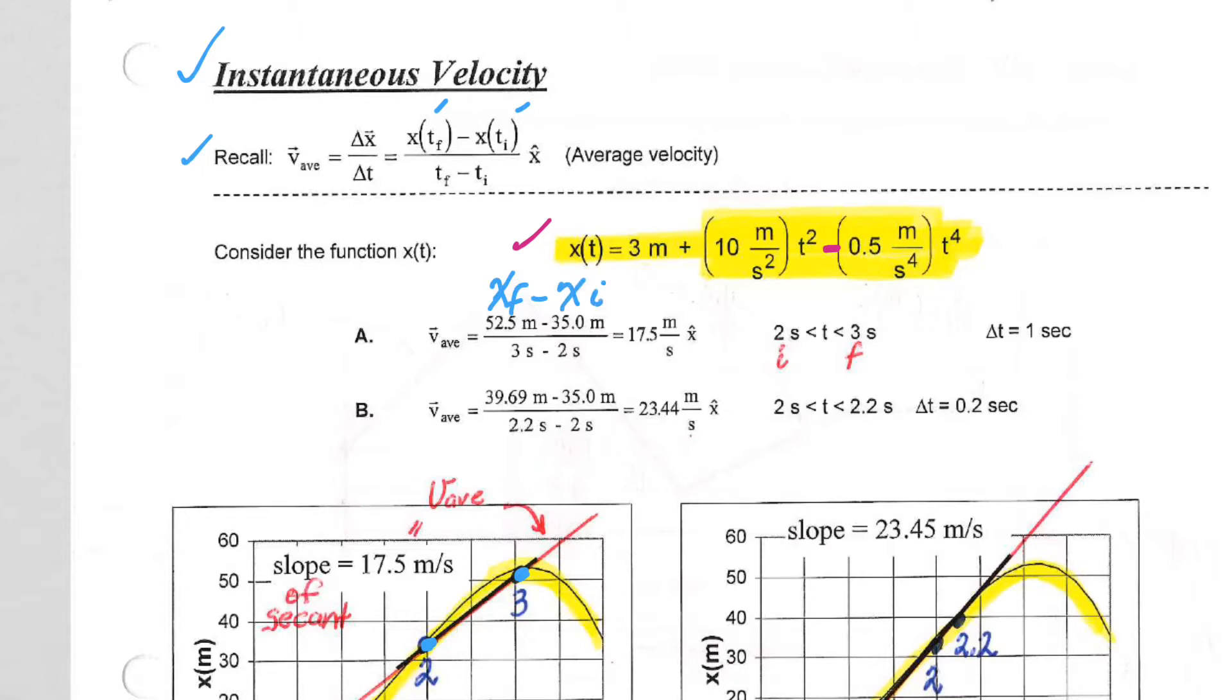I plugged in 3 seconds for t and got 52.5. x-final minus x-initial. I plugged in 2 seconds for t and got x-initial, then did t-final minus t-initial to get the 17.5 meters per second. That's the average velocity over the time interval from 2 to 3 seconds.